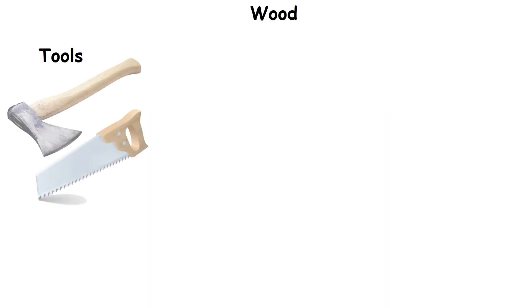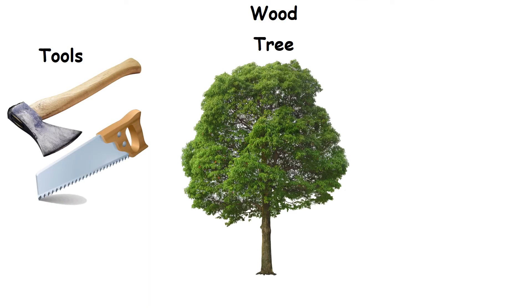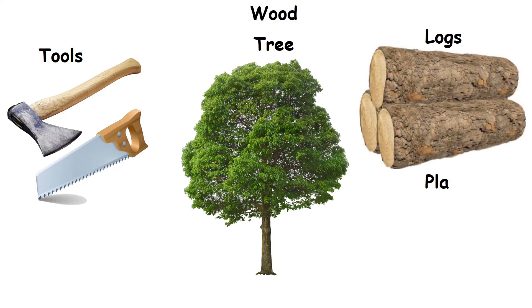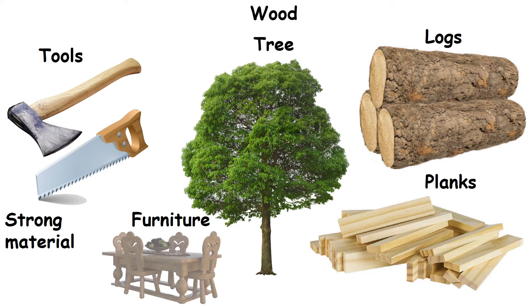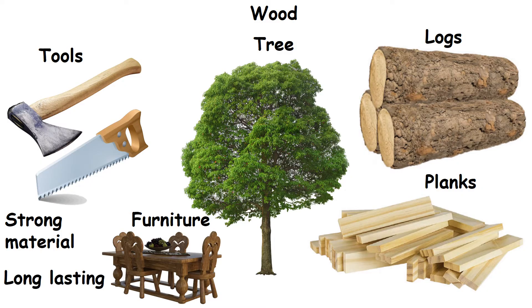Wood. Using some tools, tree trunks are cut into wooden logs and planks. Wood is a strong material, so furniture can be made from it. It is long lasting. It can be cut into pieces and can be given different shapes.